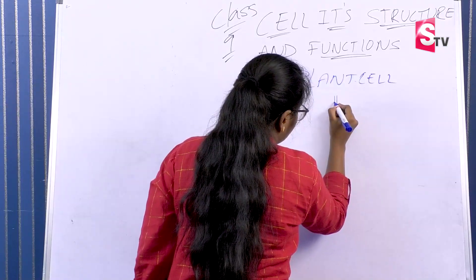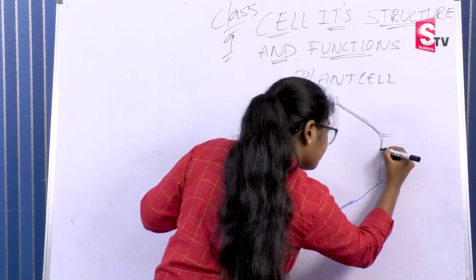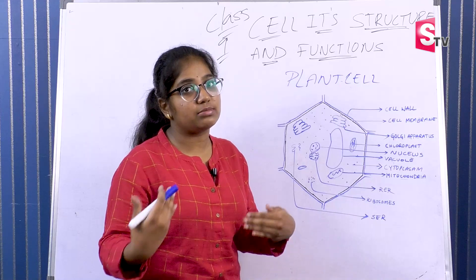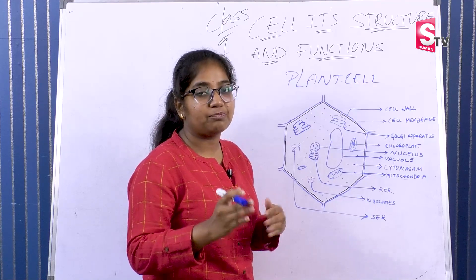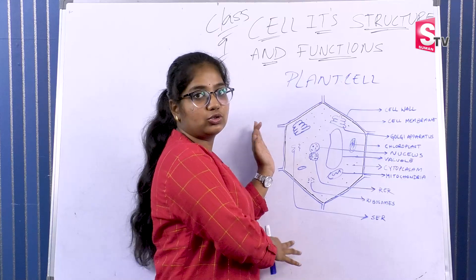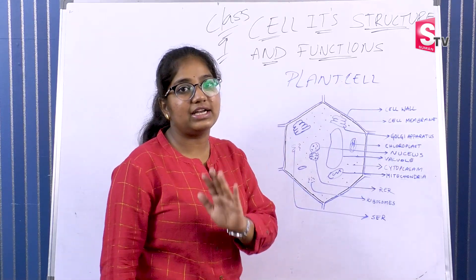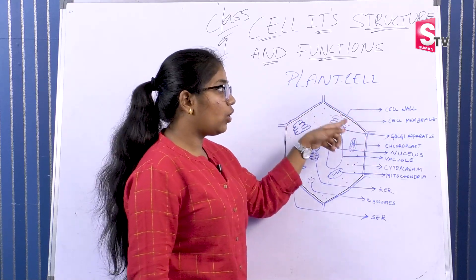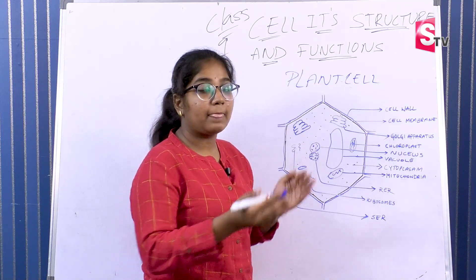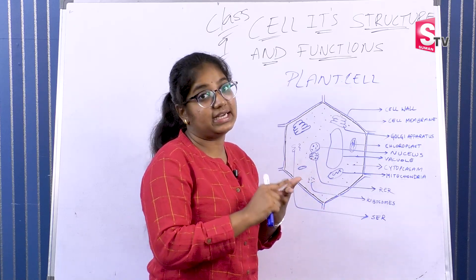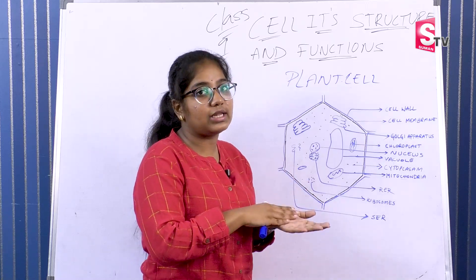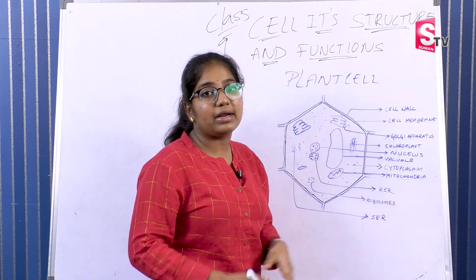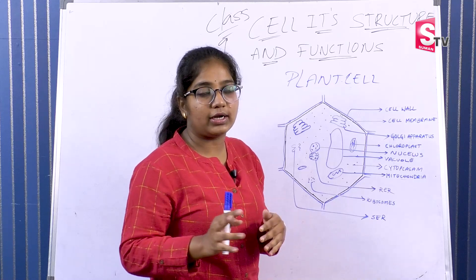Now let's discuss plant cells and animal cells. What is the difference between plant cells and animal cells? The outer membrane of the plant cell is called the cell wall. Cell wall is present in plant cells but not in animal cells. Next, what is the cell membrane? The cell membrane is also called the plasma membrane.